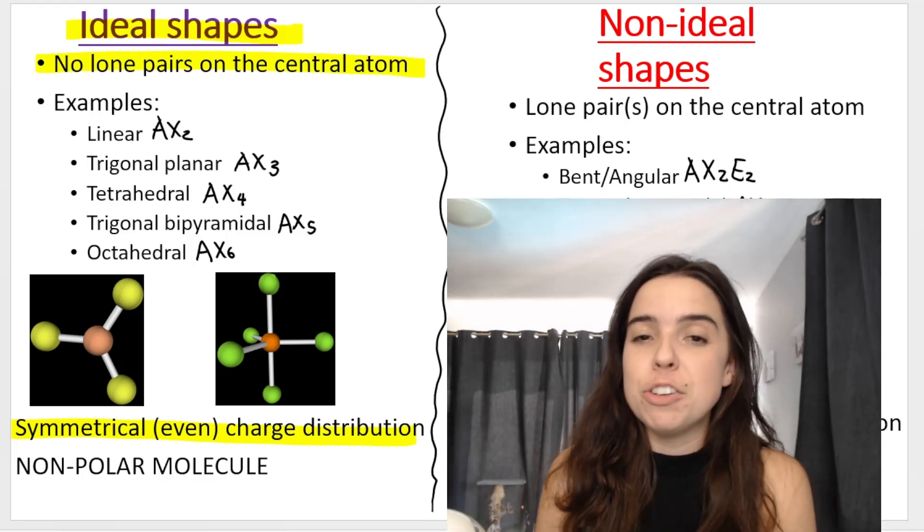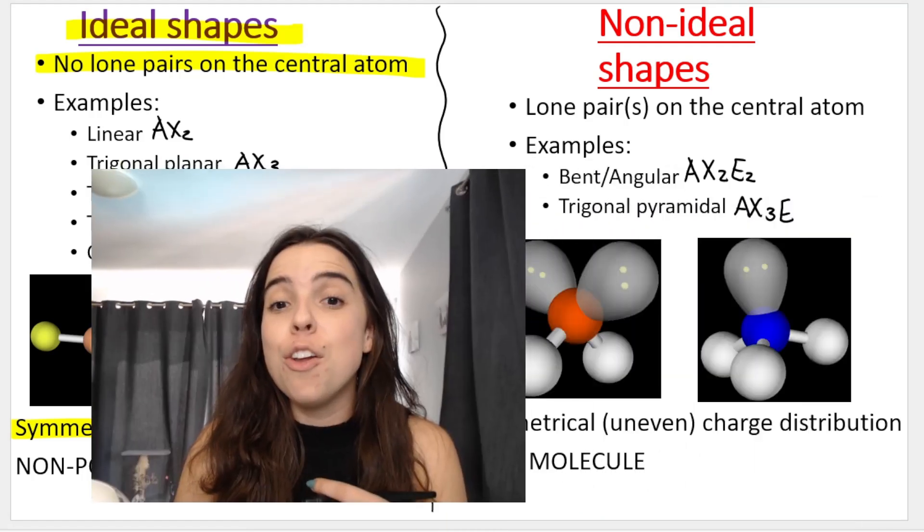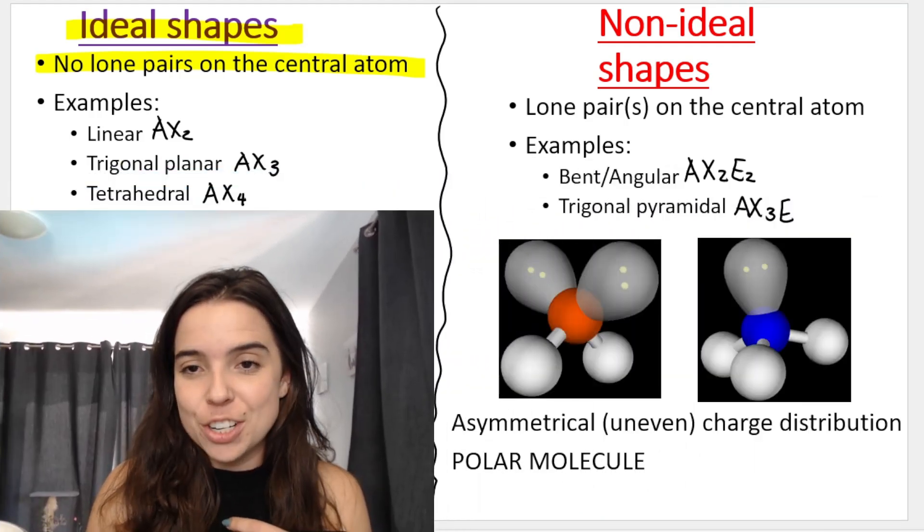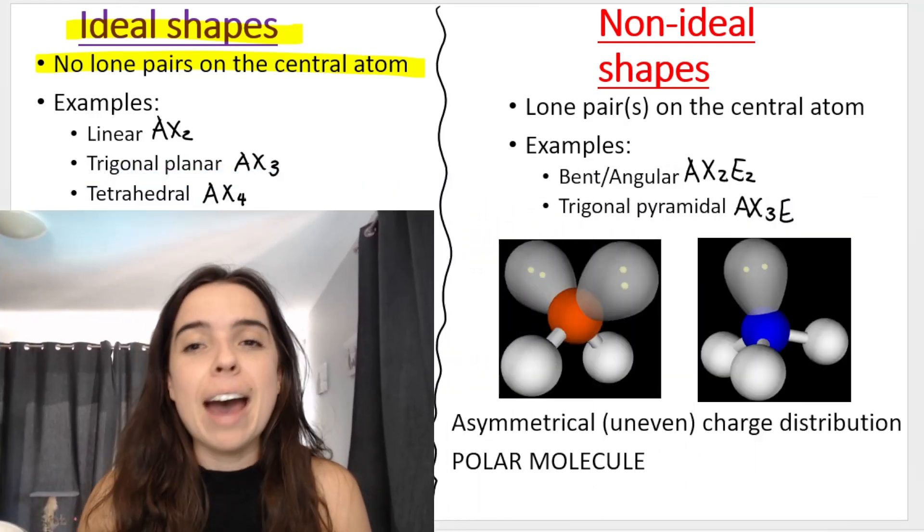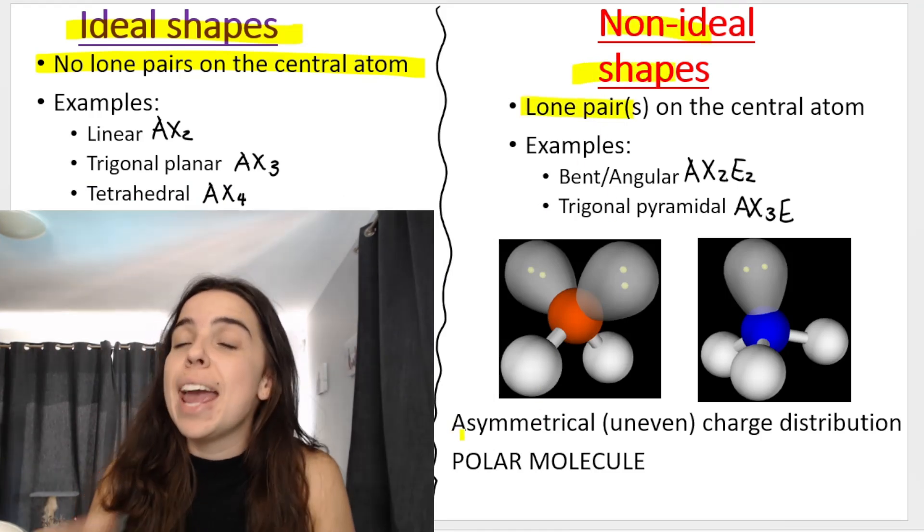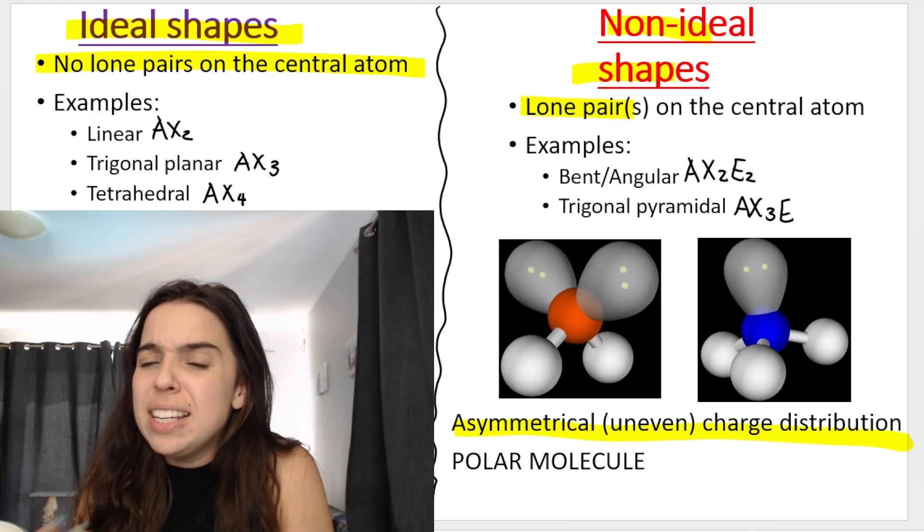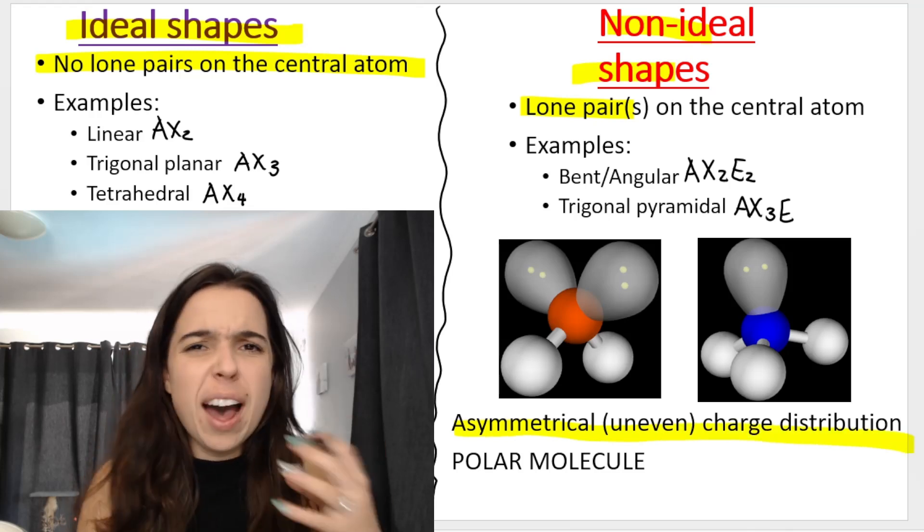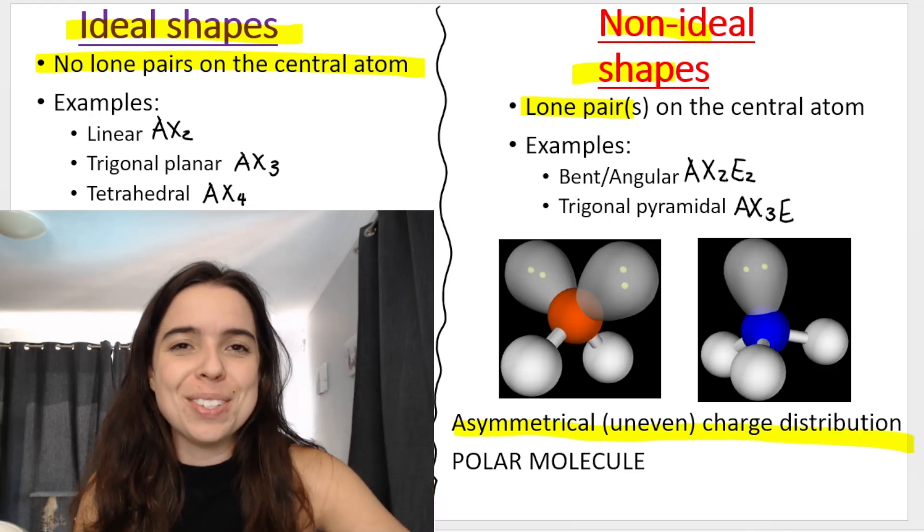So ideal shape, no lone pairs on the central atom, even or symmetrical charge distribution. Whereas if you're a non-ideal molecular shape, you do have a lone pair on the central atom, and therefore you have an asymmetrical or uneven charge distribution.